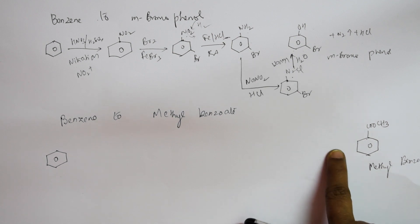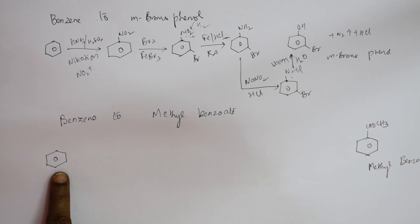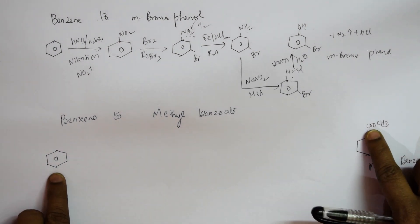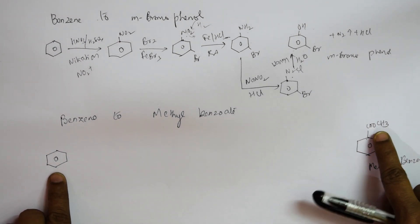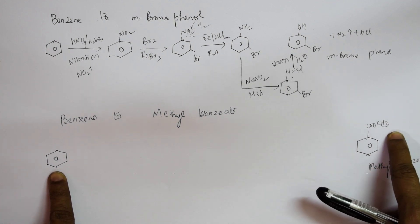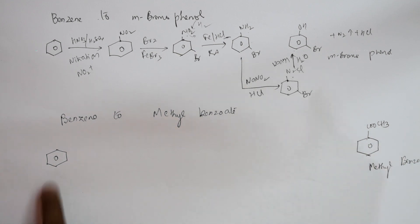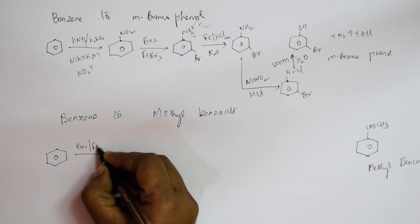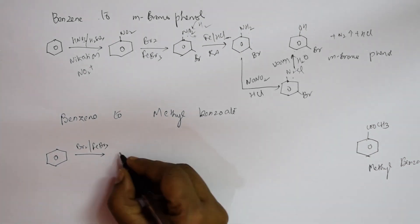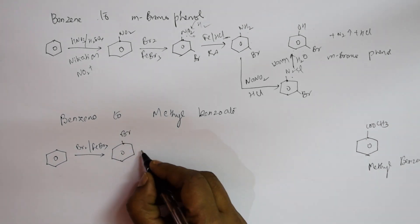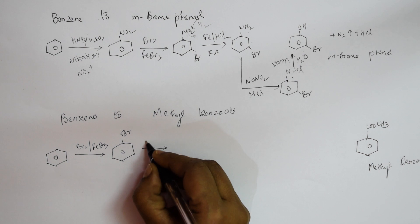Since I need to add a methyl group, I'll use Grignard's reagent. First, I introduce Br using Br2 and FeBr3 to get bromobenzene. Then I prepare Grignard's reagent by adding magnesium in dry ether.